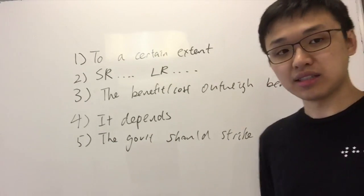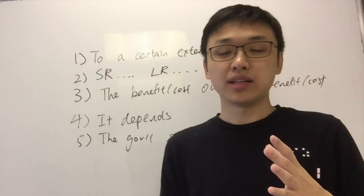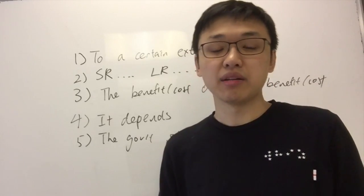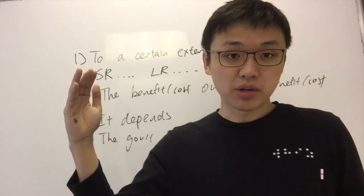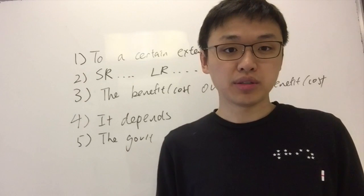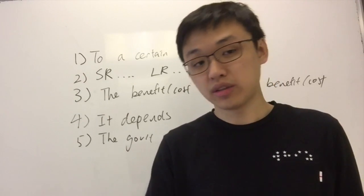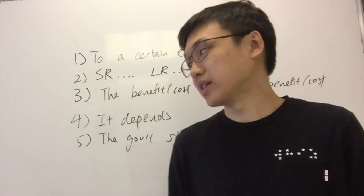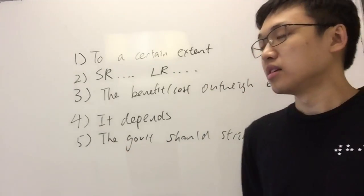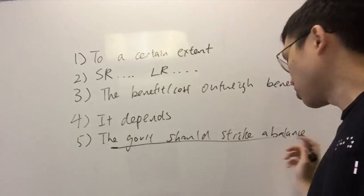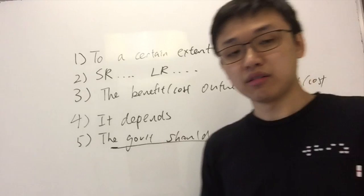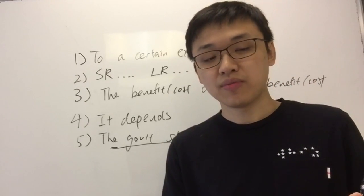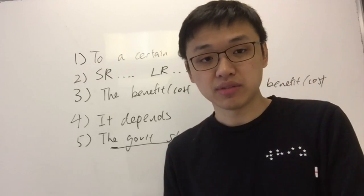'The government should strike a balance' for monetary policy: ultimately, there is a trade-off between inflation and unemployment. When we use monetary policy to reduce inflation, there is a trade-off with unemployment — as inflation falls, unemployment rises. It is important that the government strikes a balance between lowering inflation and lowering unemployment so that both macroeconomic objectives can be achieved.